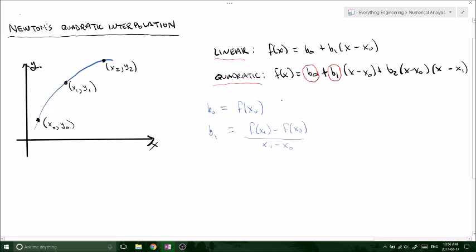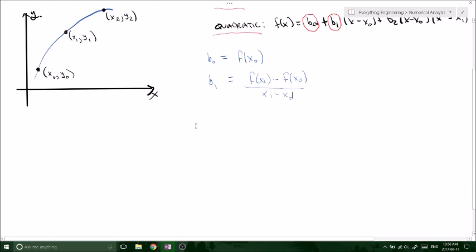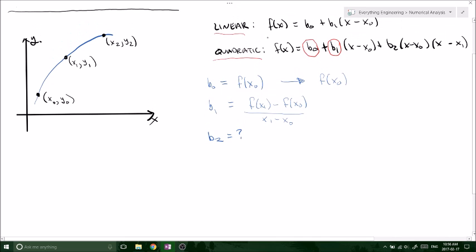Now we need to figure out what B2 equals. To get B1, all we did was plug in f of X naught into our linear function, and in this case plug it into your quadratic function. We found f of X1 and then we solved for our B1 unknown. Now to get B2 we need to plug in f of X2 into our quadratic function.